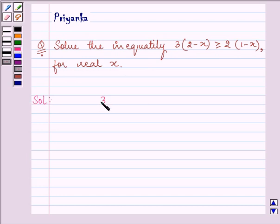Proceeding on with the question. First of all, here we need to remove the brackets. And on removing the brackets we get, 6 minus 3x is greater than or equal to 2 minus 2x.